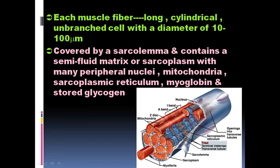Beneath the sarcolemma we have protein threads extending throughout. These protein threads show a regular pattern of dark and light bands. The dark band is the A band and the light band is the I band. Within the A band there is a slightly lighter region known as the H zone. We will study why this region is lighter compared to the surrounding dark band areas.